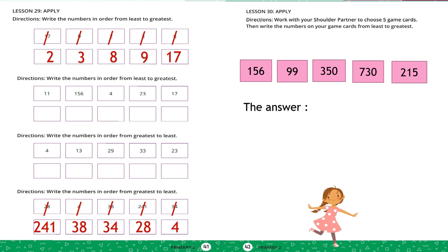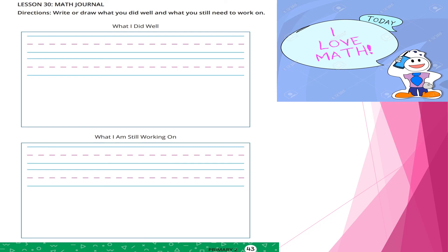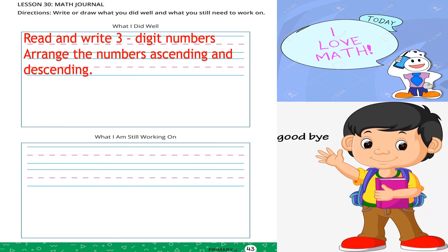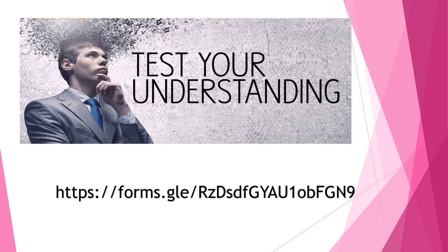The next page: work with your shoulder partner to choose five game cards, then write the numbers from least to greatest — ascending order. The smallest one here is 99, and the next smallest is 156. Complete this exercise. Our math journal: write or draw what you did well and what you still need to work on. What I did well — read and write three-digit numbers; arrange the numbers ascending and descending. Complete this page and goodbye. Test your understanding using this link. Thank you.